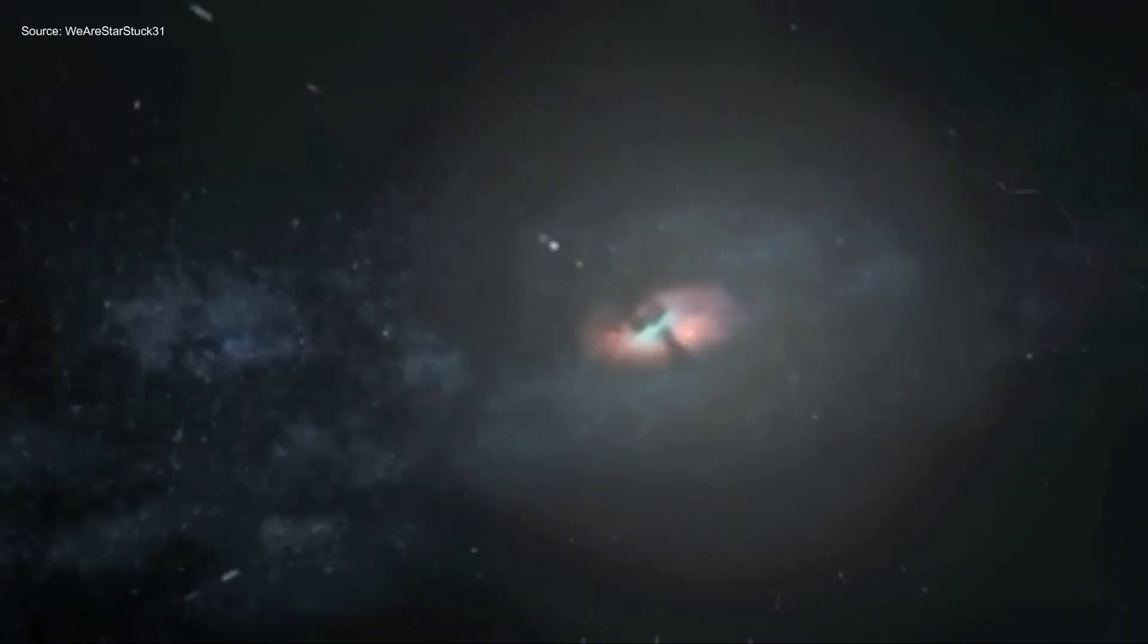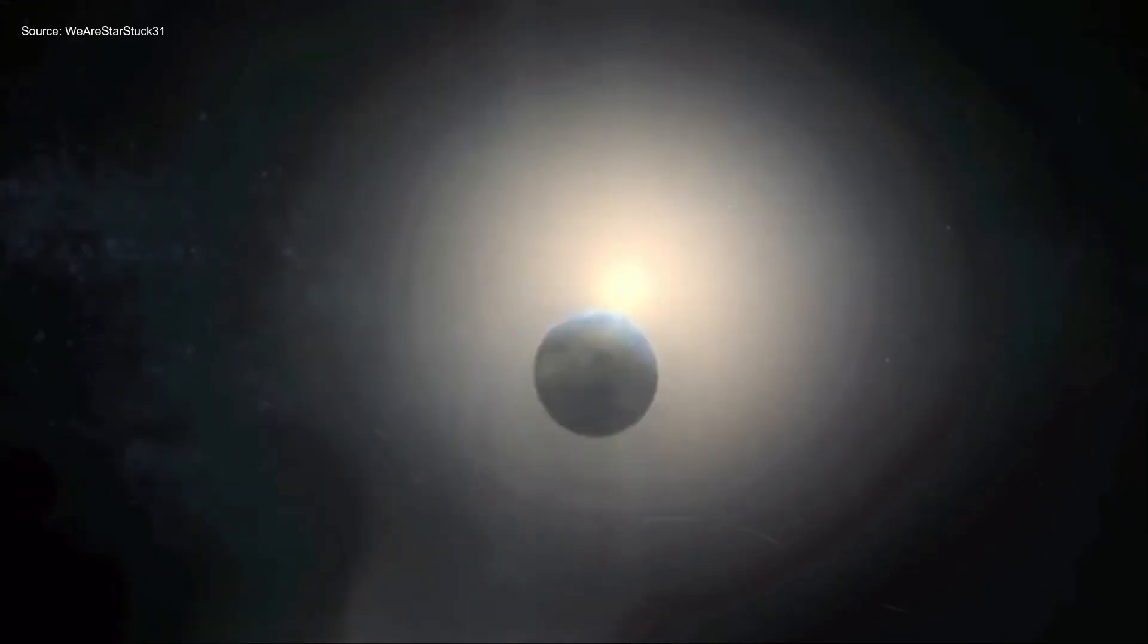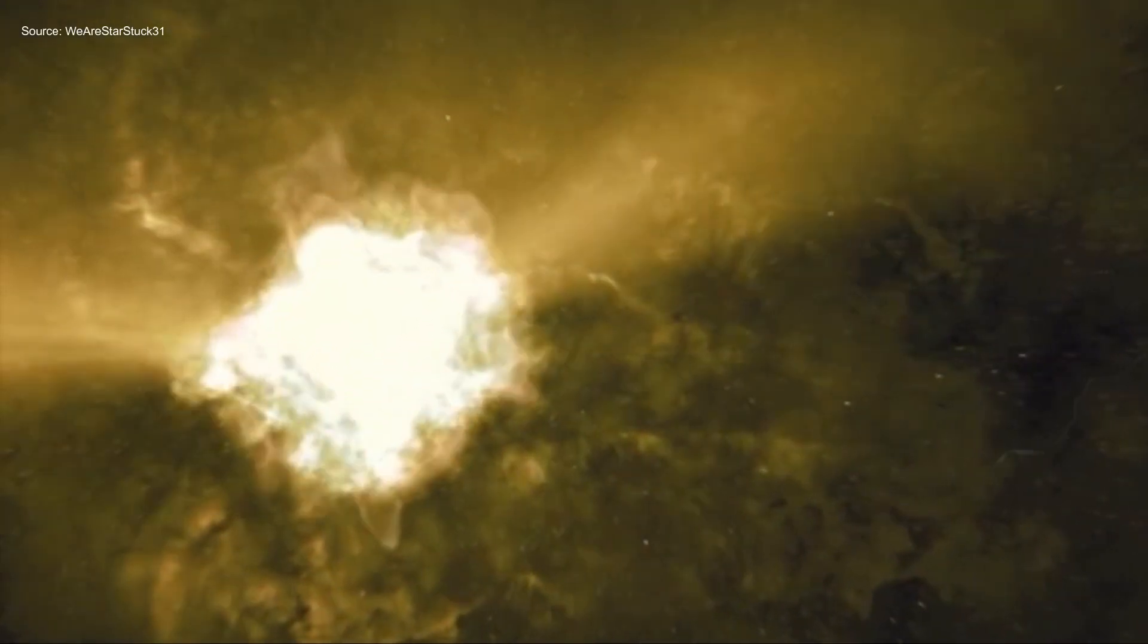The solar nebular theory describes the formation of our solar system from a nebula cloud made from a collection of dust and gas that collapsed upon itself to give birth to an infant star.